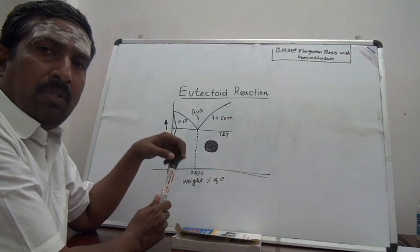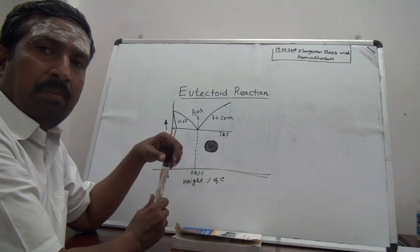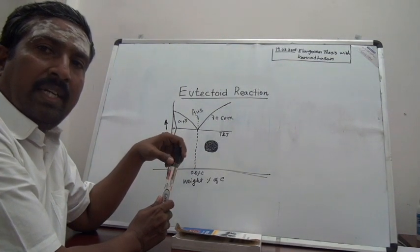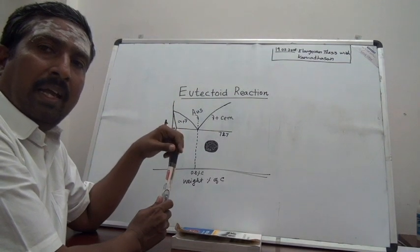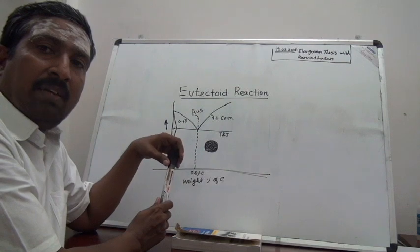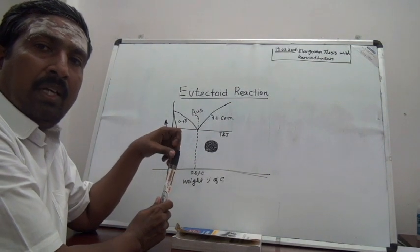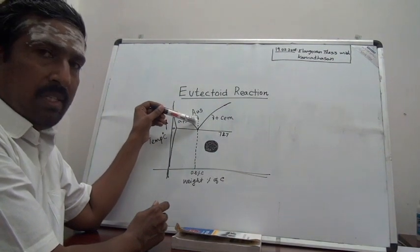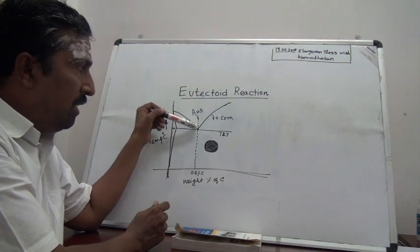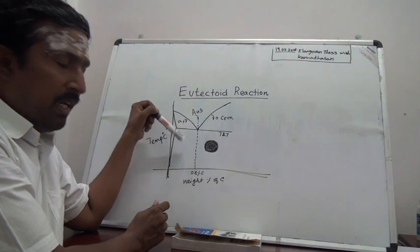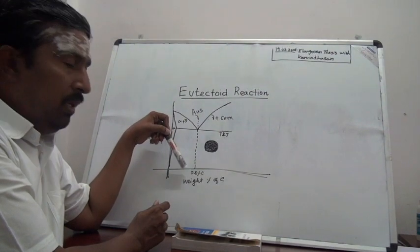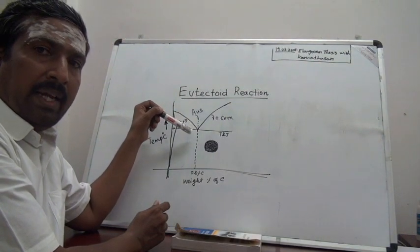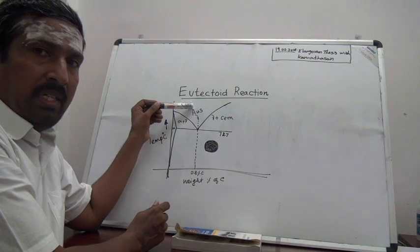The condition for eutectoid reaction to take place is that the carbon content in austenite must be exactly 0.8 percent and the temperature must be the eutectoid temperature, which is 727 degrees Celsius. As the temperature decreases from above, the phase remains austenite. When this temperature is reached, the steel already has 0.8 percent carbon at 727 degrees Celsius, and therefore it is subjected to the eutectoid reaction.